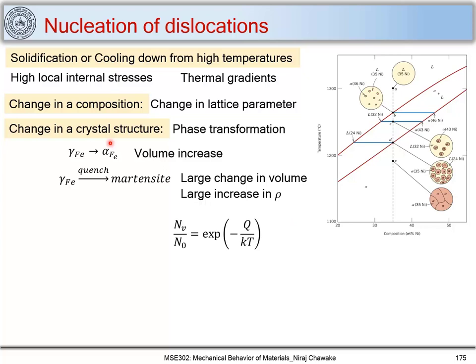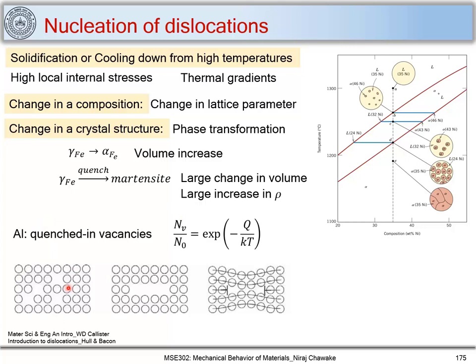Another reason involves vacancies, which are thermally equilibrium defects with an equilibrium concentration at a given temperature. For FCC materials like aluminium, when you quench from high temperature these vacancies remain at high concentration even at room temperature. These quenched-in vacancies accumulate on high atomic density planes, creating strain and causing the formation of vacancy loops.